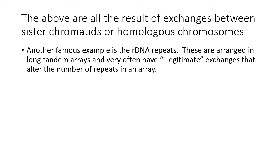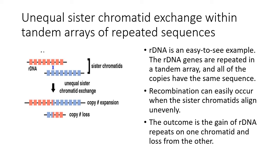These are all examples involving exchanges between sister chromatids or homologous chromosomes. The last example is ribosomal DNA repeats. These are arranged in tandem in very long arrays and very often have illegitimate exchanges that change the number of copies in an array. This kind of event occurs all the time, so these arrays are constantly expanding and contracting. A ribosomal array misaligned with its sister chromatid undergoes unequal exchange, leading to one chromatid with extra copies and another with fewer.